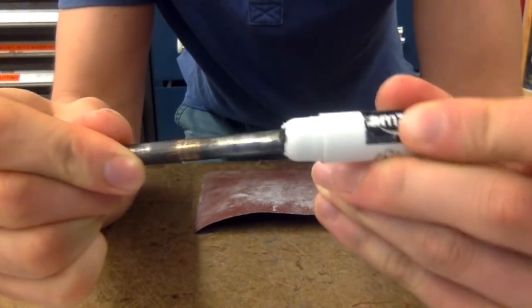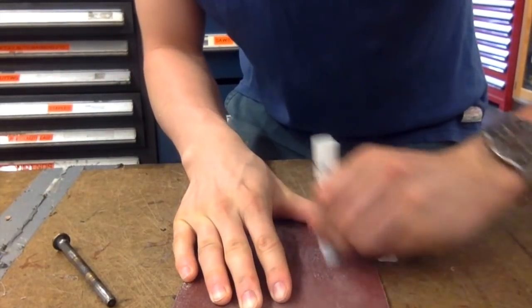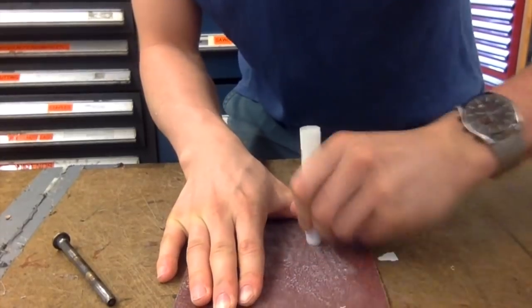The pin doesn't quite fit, so I'm sanding the nose of the marker to widen the opening. My pin is just a bolt taken from a hinge, but any iron bolt should do.